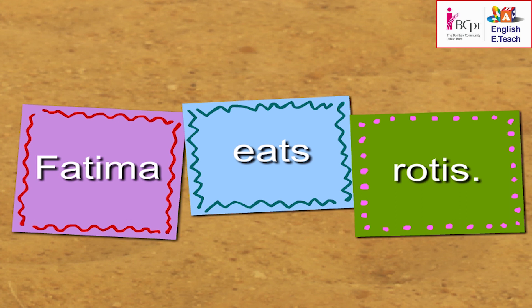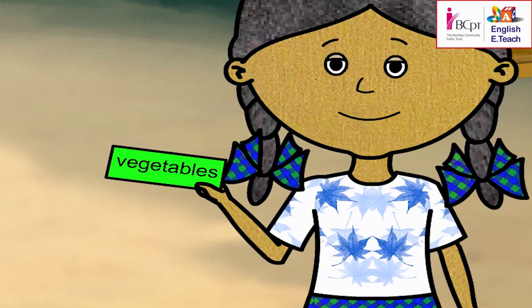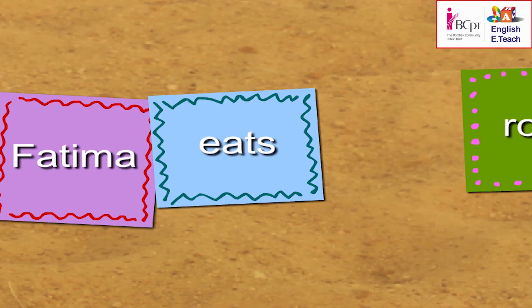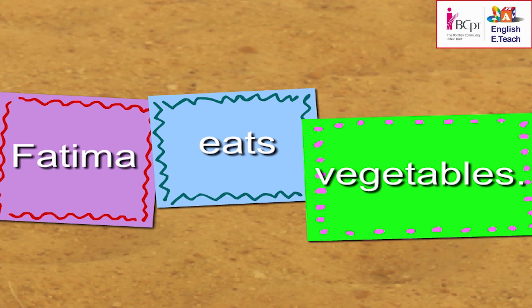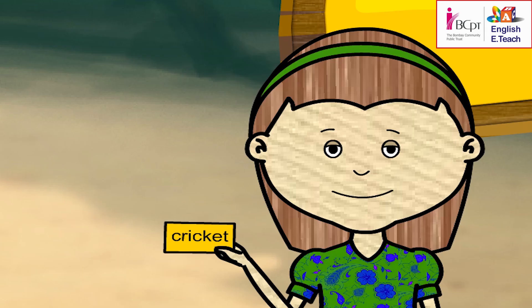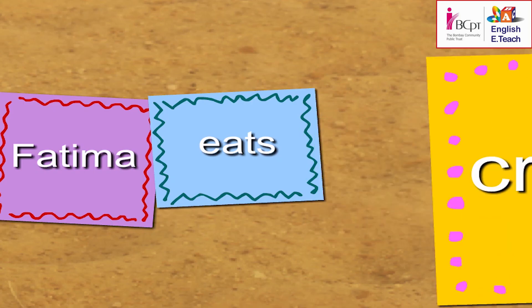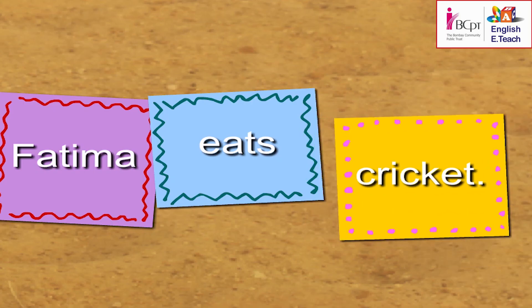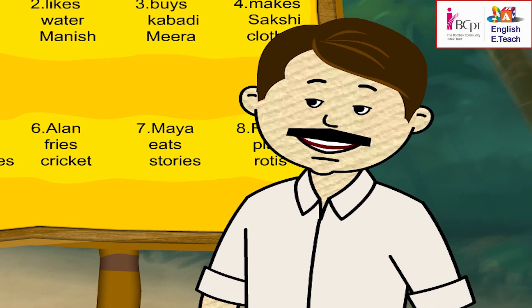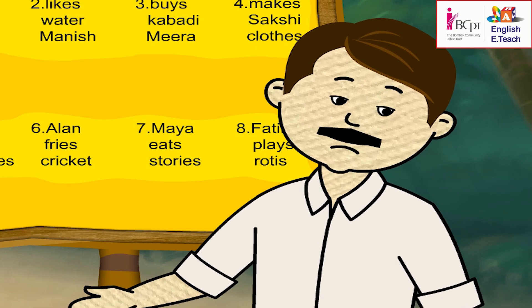Roochi. Vegetables. Fatima eats vegetables. Cricket. Oh no, I can't say 'Fatima eats cricket.' No, you can't.